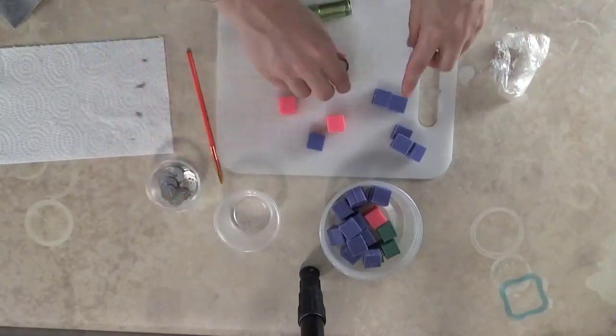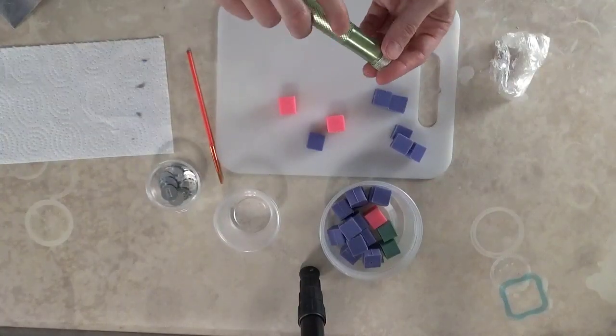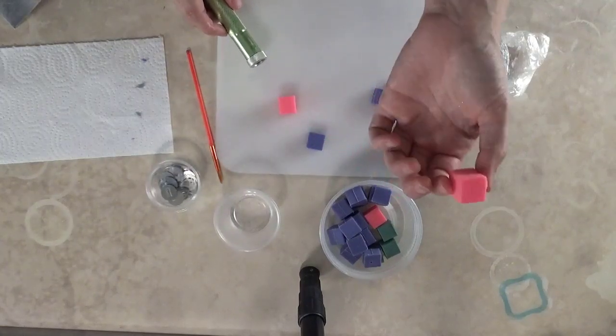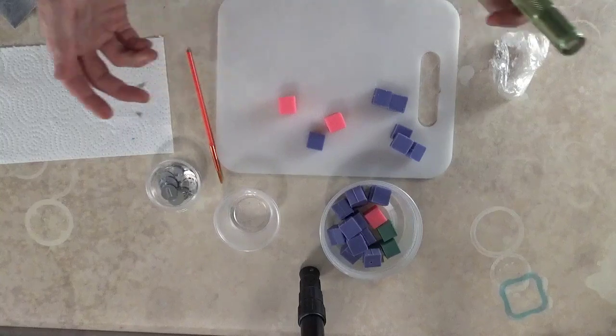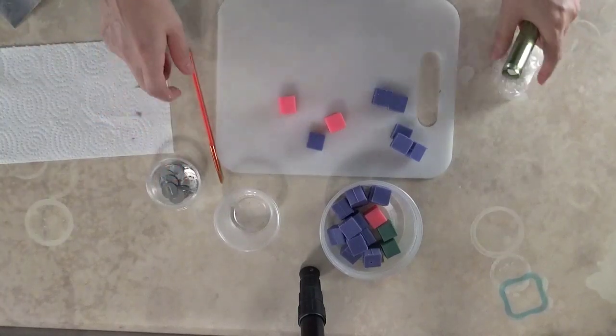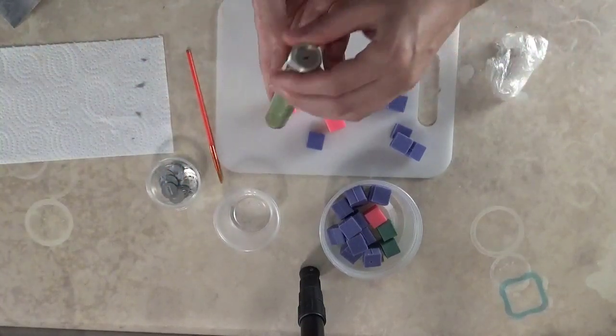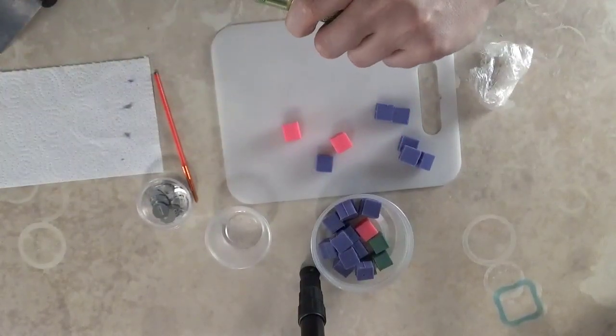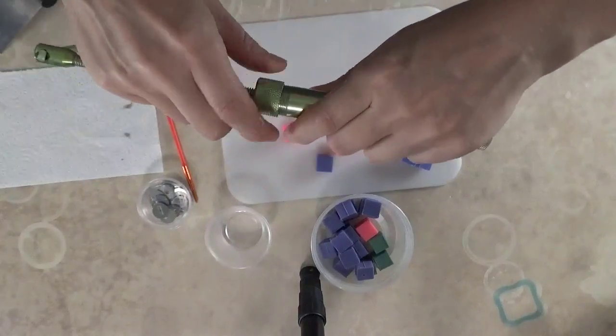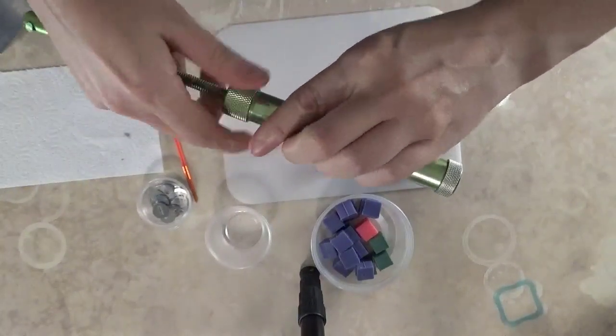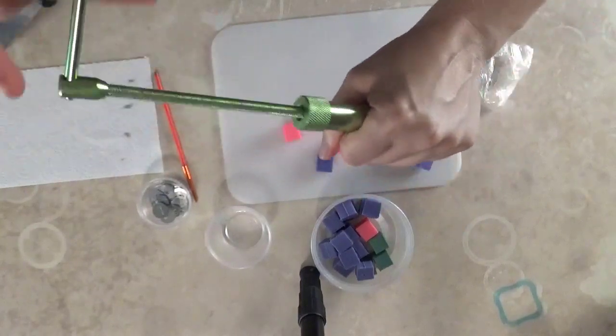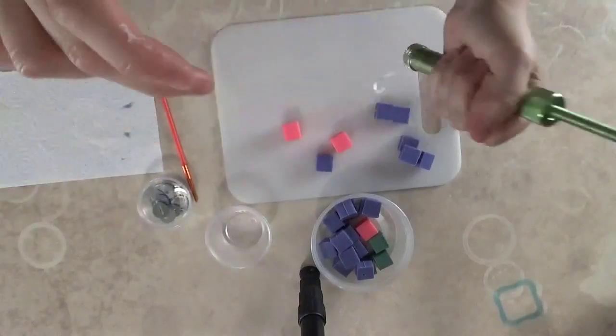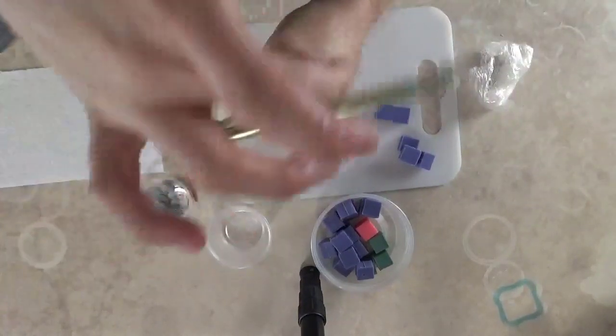The extruder set comes with three different rectangle pieces. You want the smallest one - that is the one that we are going to be using for this size present. If you were to make larger presents, like bigger boxes, you might want to use those larger pieces. So I've put that on. Now you only want to extrude a little bit at a time.